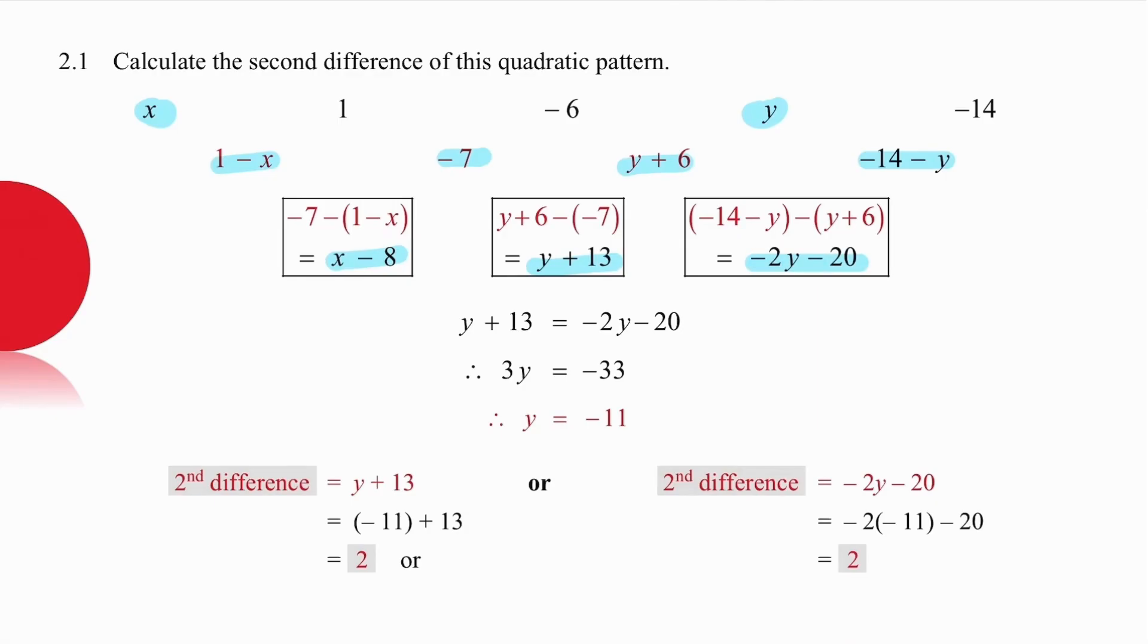So, select carefully, it's obviously better to have an equation with one unknown, y equals minus 11. Minus 11 is not a difference, it is a value in the sequence. With that value in the sequence, we can easily work out the second difference because we already know that the second difference can be y plus 13 or minus 2y minus 20. So, substituting into either y plus 13 or into minus 2y minus 20 in both cases, the answer will be 2.